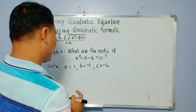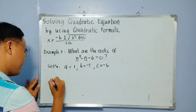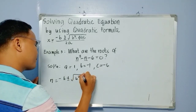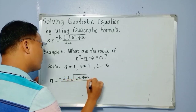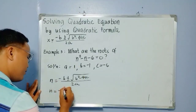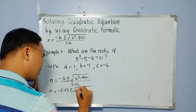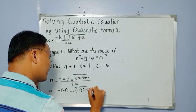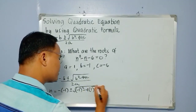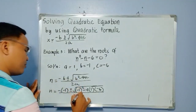Let us use the quadratic formula. Since our variable in this equation is n, x will be changed to n. So we have n equals negative b plus and minus the square root of b squared minus 4ac, all over 2a. Substitute: n equals negative of negative 1, plus and minus the square root of negative 1 squared, minus 4 times 1 times negative 6, all over 2 times 1.